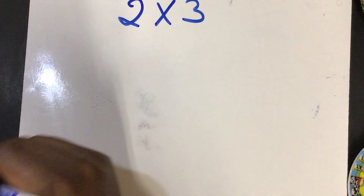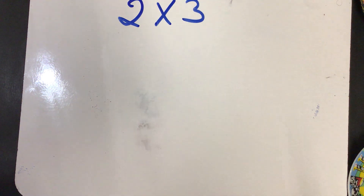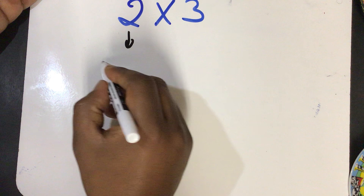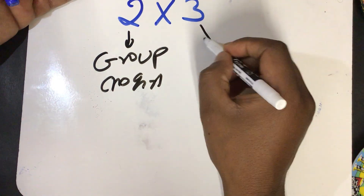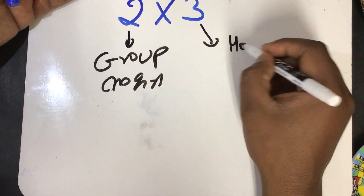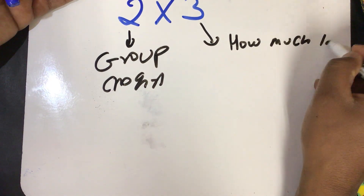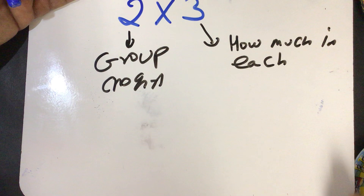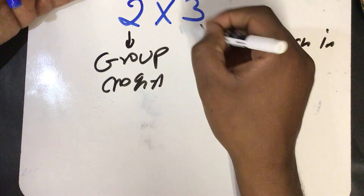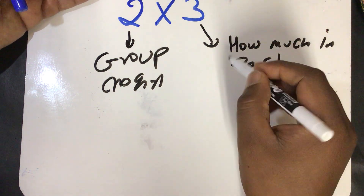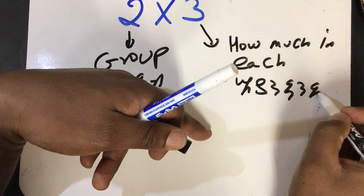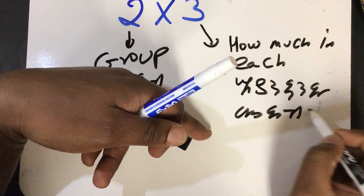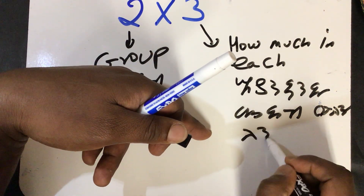Let's take a look at the example of how to make a group of groups. How much in each? The group is one hundred and the group is one hundred.